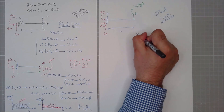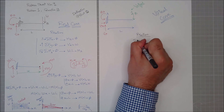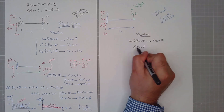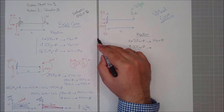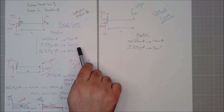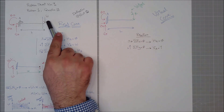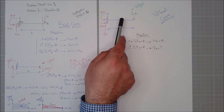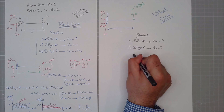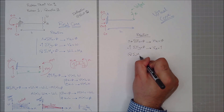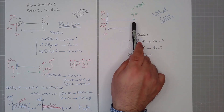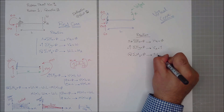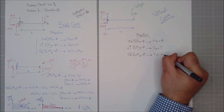Let's calculate the virtual reactions. Summation of forces in x: HA equals zero. Summation of forces in y going upward positive: VA equals 1. Summation of moments at A equals zero: 1 times L gives MA equals L. Because the question asks for deflection at B, I was lucky — I just replaced W with 1. If it were asking for the midpoint, the virtual load would go in the middle and you'd get completely different moment results.